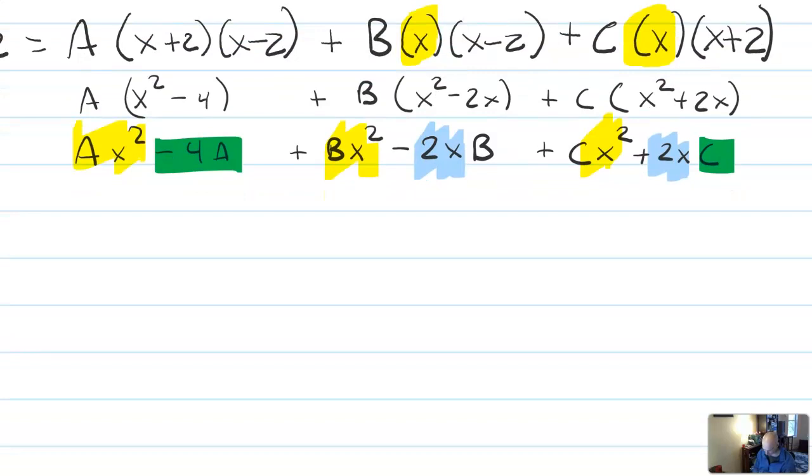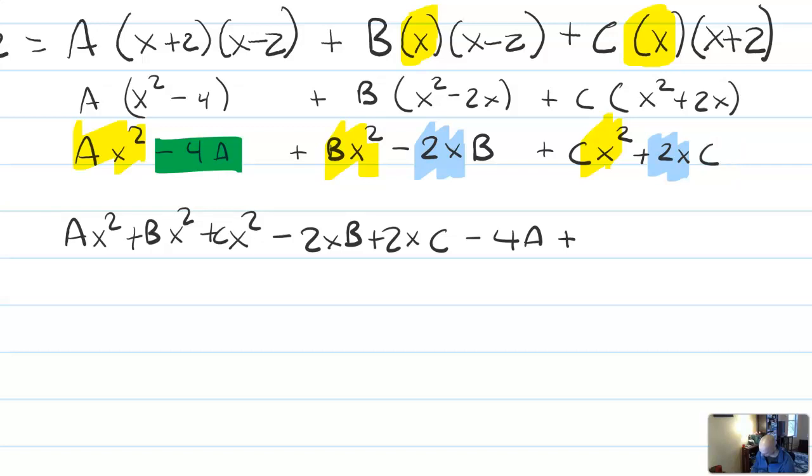It has an a. That's not the variable we're looking at. We're looking for the constants in the polynomial. So I'm going to have ax squared plus bx squared plus cx squared minus 2xb plus 2xc minus 4a. Oh, wait a minute. Minus 4a. Sorry, that 2x was on the b and c.